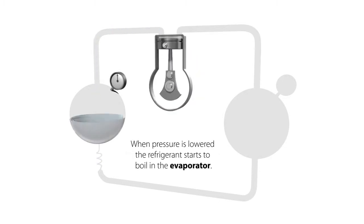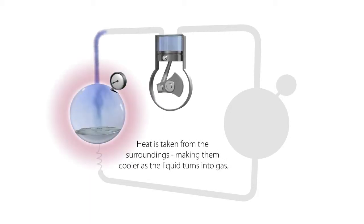When pressure is lowered, the refrigerant starts to boil in the evaporator. Heat is taken from the surroundings, making them cooler as the liquid turns into gas.